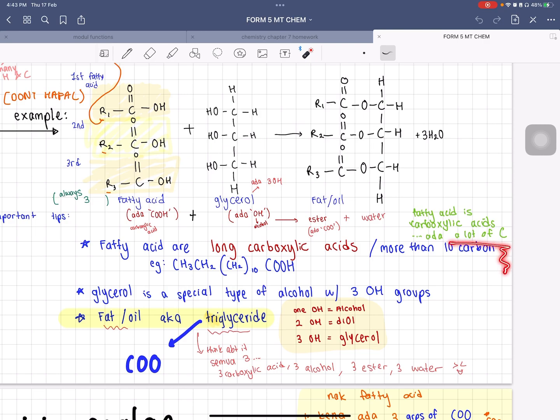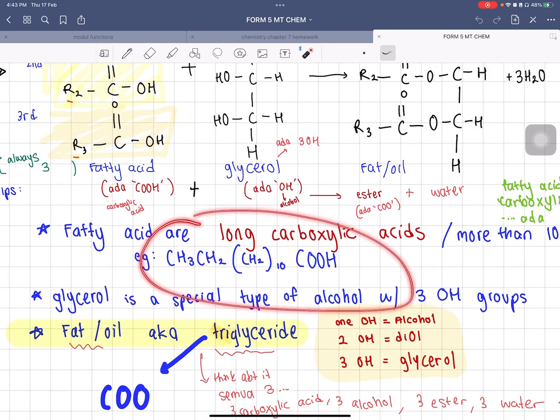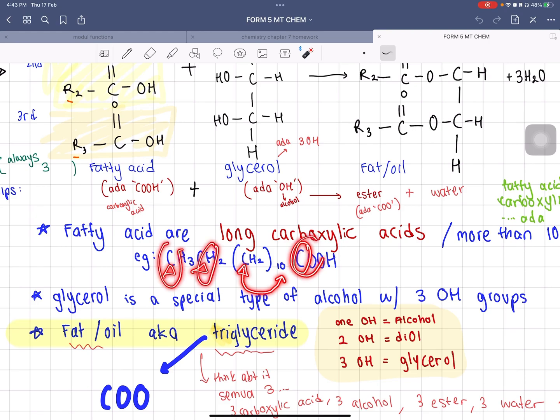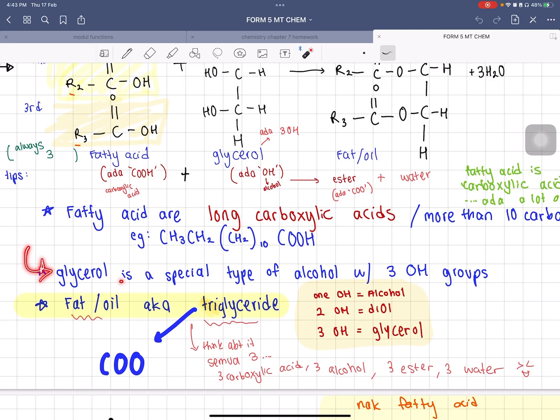Carboxylic acid has a lot of C's. For example this, let's count the amount of C's: one, two... here we have 10 and one, so one, two, three plus 10 plus 13. Then automatically that can be known as long carboxylic acid. Glycerol is a special type of alcohol with 3 OH groups. For example, if it's 1 OH then it's alcohol, if it's 2 OH then it's diol, if it's 3 OH then it's called glycerol.